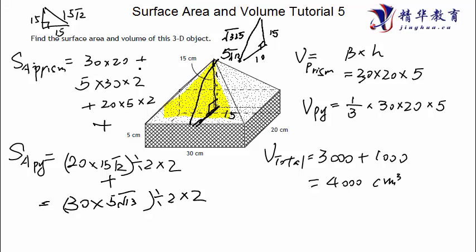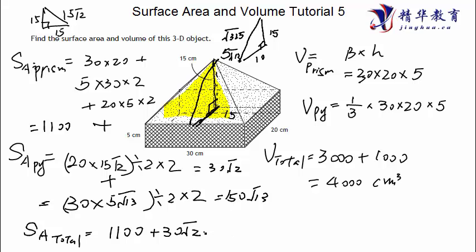So this is how much? This is 600 plus this is 300. This is 900 plus this is 200. Total is 1100. This side is 20 times 15 square root of 2 is 300 square root of 2 and then that is 150 square root of 13. So our surface area total equal to 1100 plus 300 square root of 2 plus 150 square root of 13. That's square centimeters because this is area.